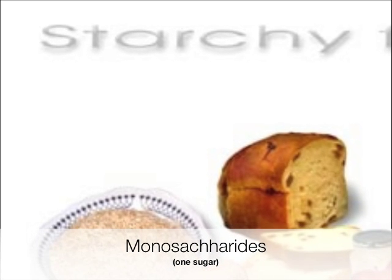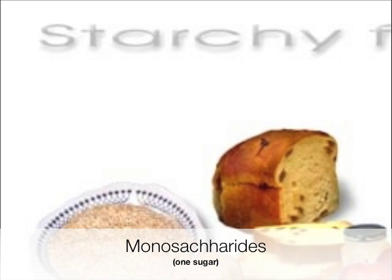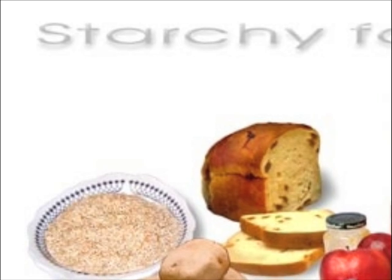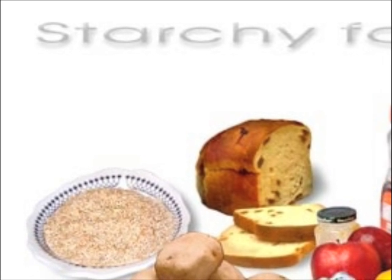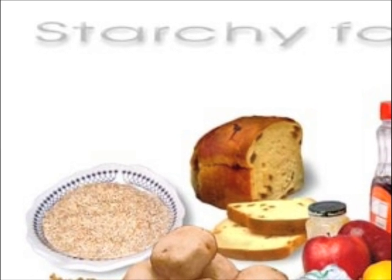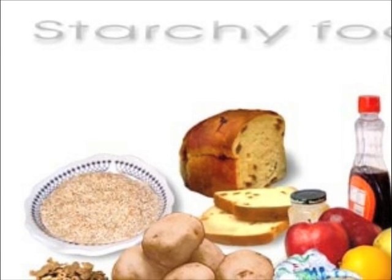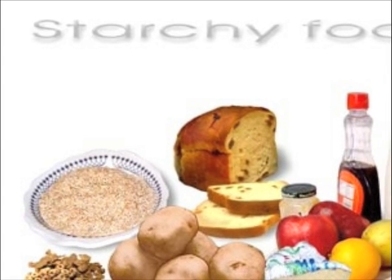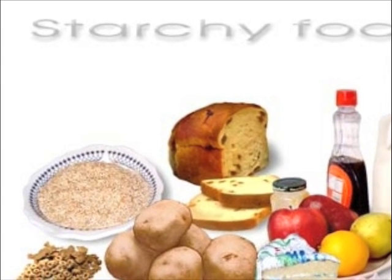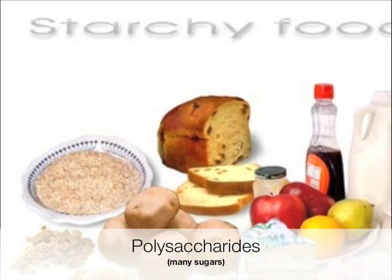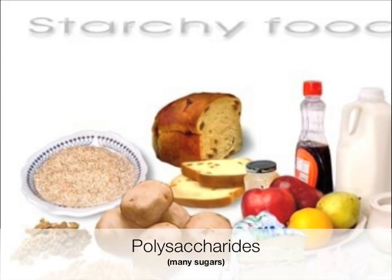Monosaccharides, such as glucose, fructose, and ribose, are the simplest sugars. Disaccharides are two simple sugars bonded together, such as the milk sugar lactose, glucose and galactose, and maltose, two bonded glucose molecules.